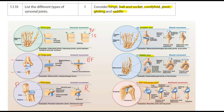Our condyloid joint is biaxial. The example here is between the metacarpals and phalanges. They allow backwards and forwards and side to side type motions — specifically flexion and extension as well as abduction and adduction.